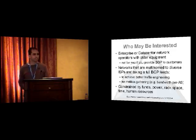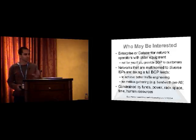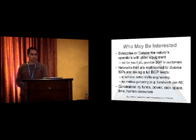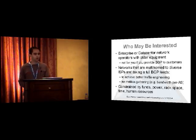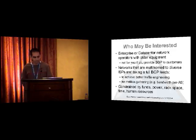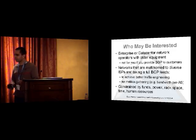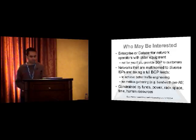I'm targeting enterprise data center network operators who have older equipment. I'm not talking to you if you're providing BGP to your customers — at that point you really want to hold the full table and share it with your customer base. This is for enterprise data center networks that are multi-homed to multiple ISPs and taking a full BGP feed, either because you want better traffic engineering — sending this AS here and that AS there — or you're collecting data like sFlow or NetFlow to gather metrics on how much data is going to which AS. But you find yourself constrained by funds, power, rack space, time, or human resources to support 263,000, 300,000, or more routes in the forwarding table.